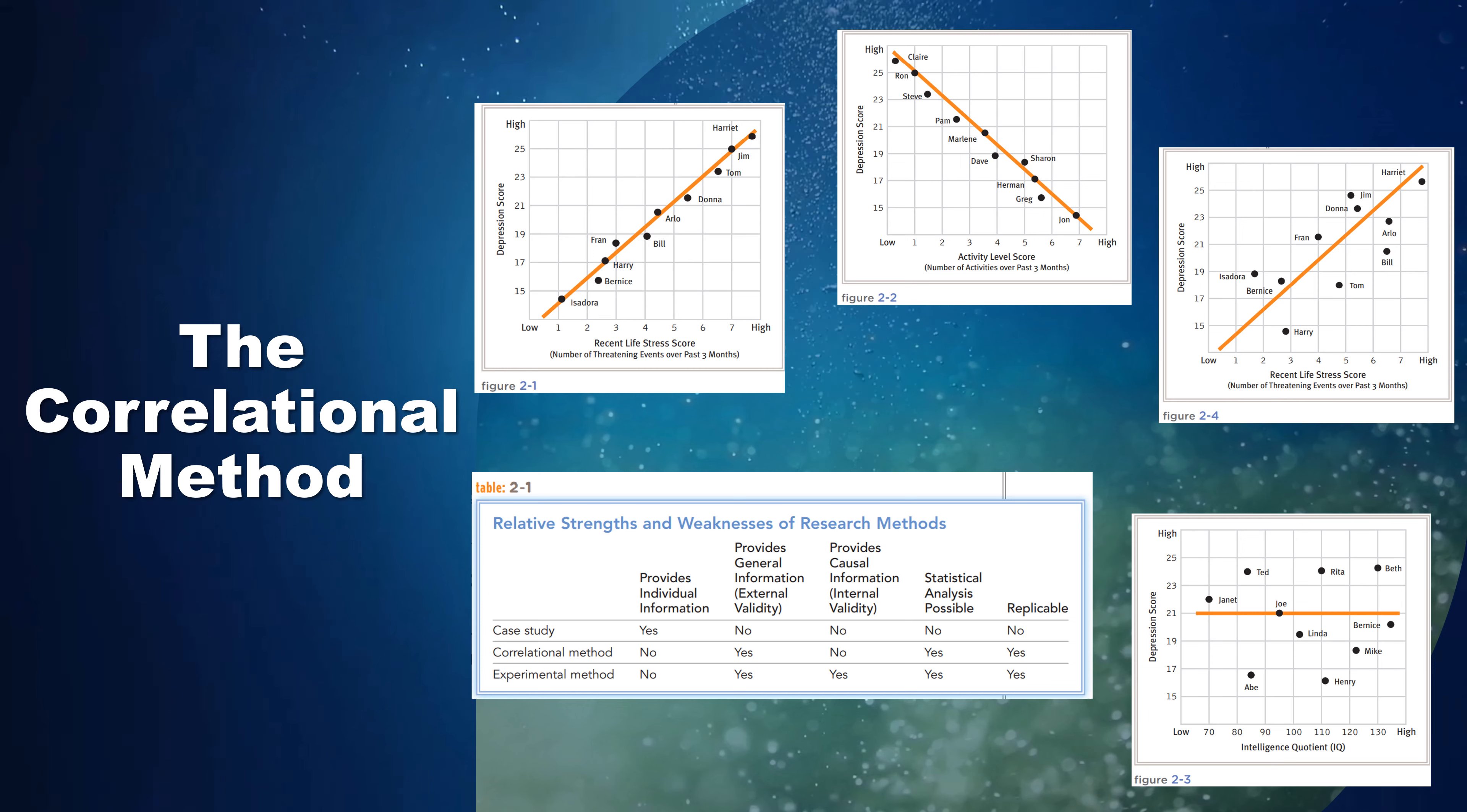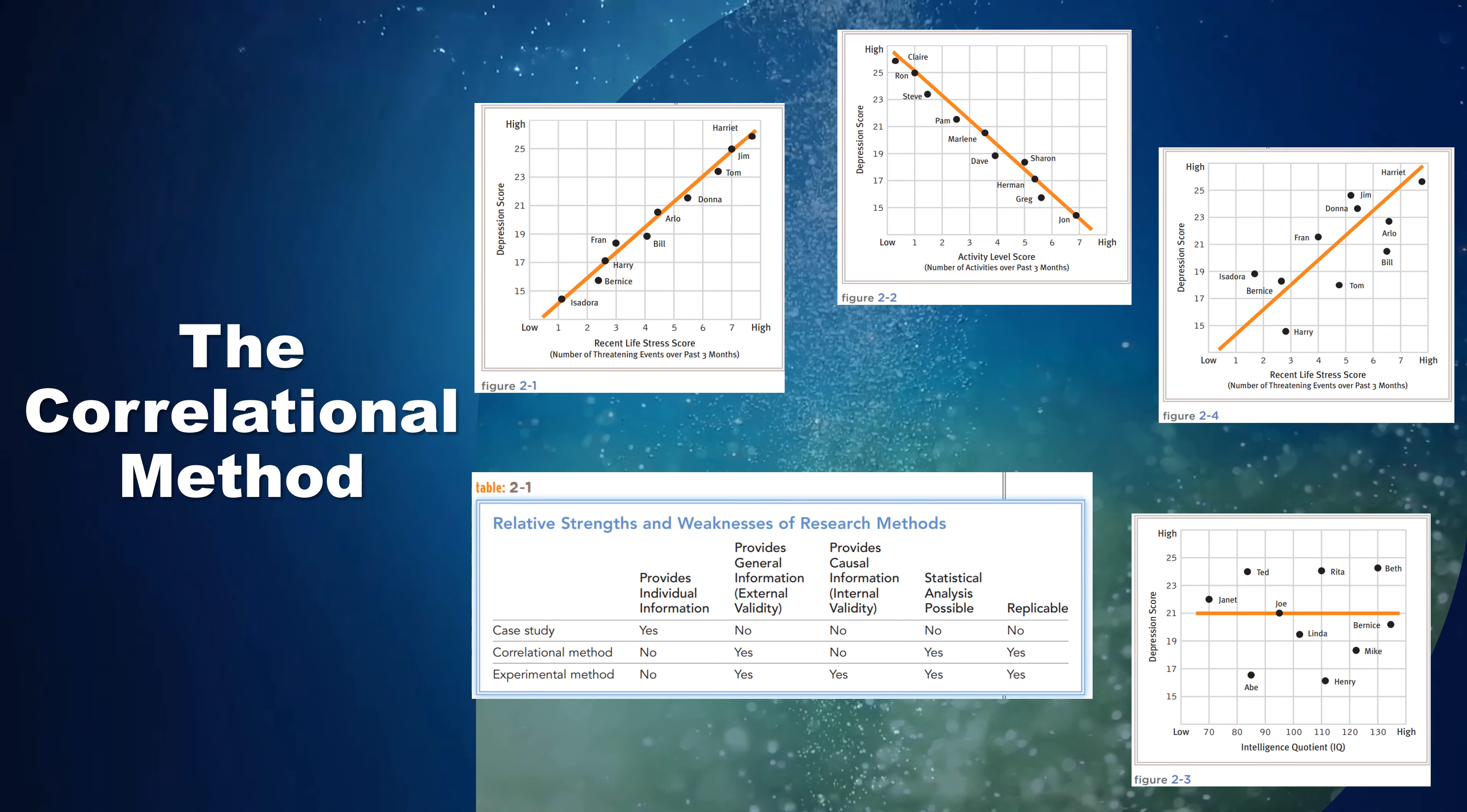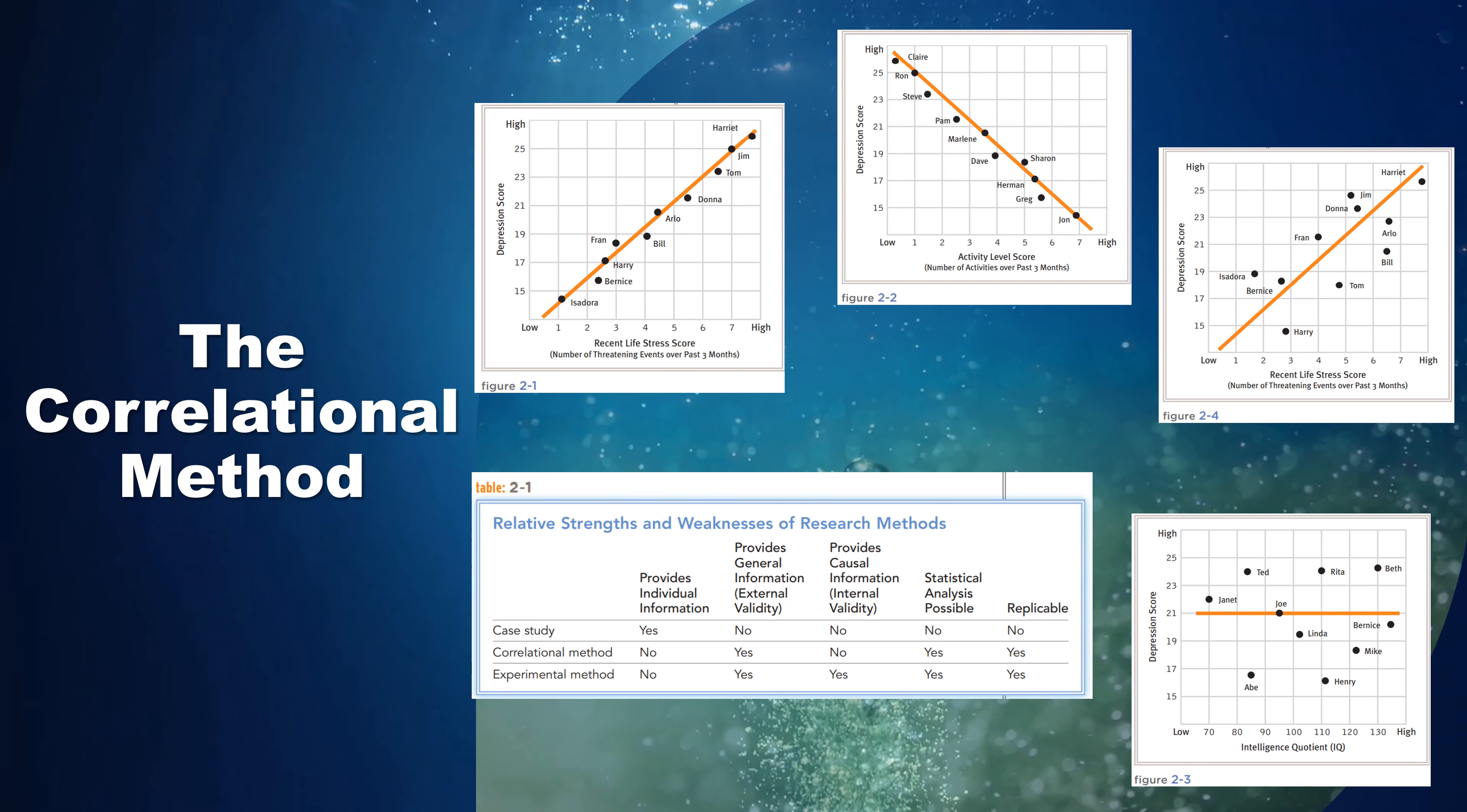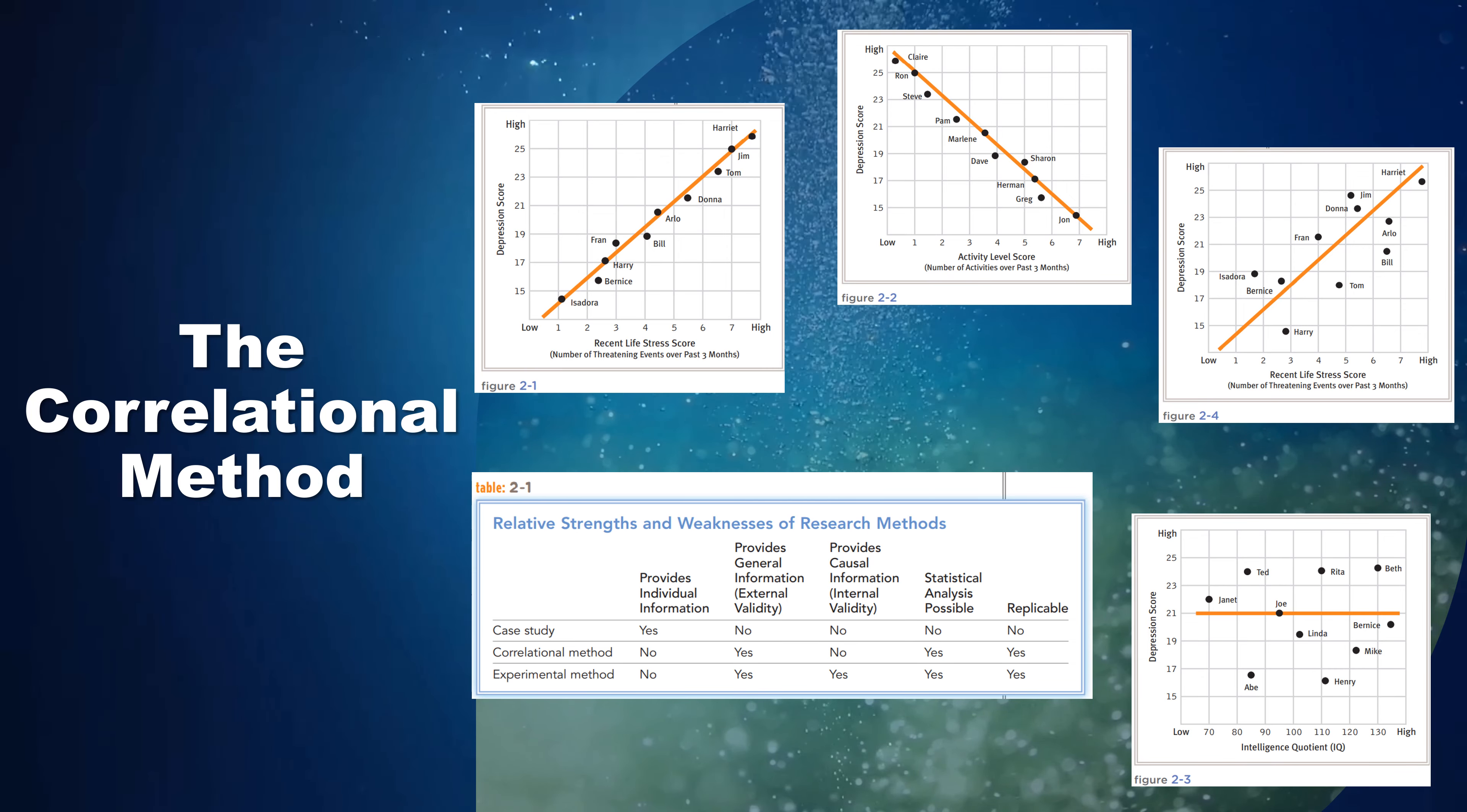A cutoff point helps researchers make this decision. By convention, if there is less than a 5% probability that a study's findings are due to chance, the findings are said to be statistically significant and are thought to reflect the larger population. In the life stress study described earlier, a statistical analysis indicated a probability of less than 5% that the +0.53 correlation found in the sample was due to chance. Therefore, the researchers concluded with some confidence that among adults in general, depression does tend to rise along with the amount of recent stress in a person's life.